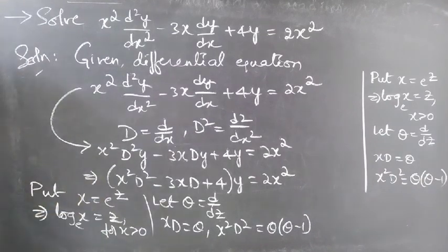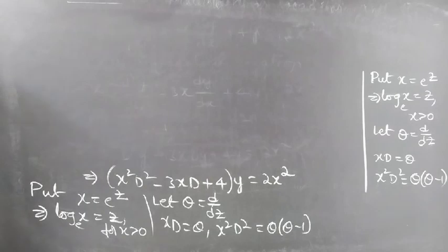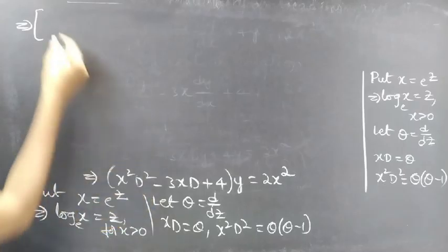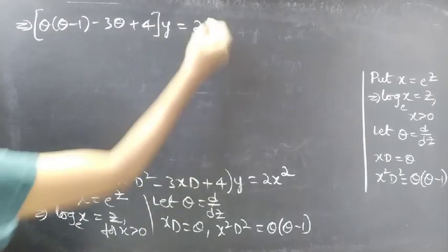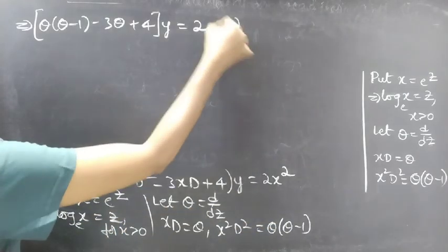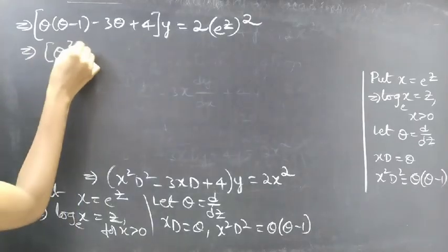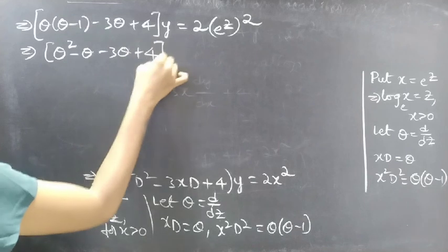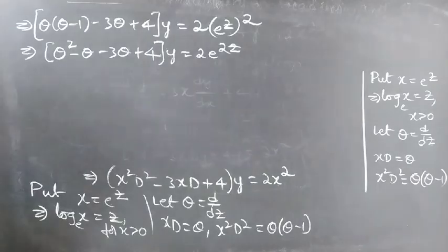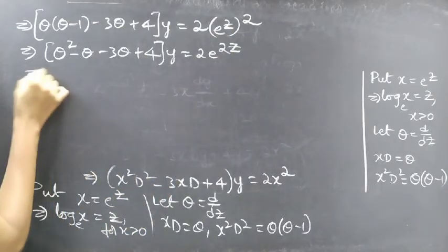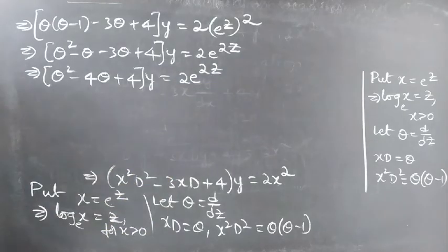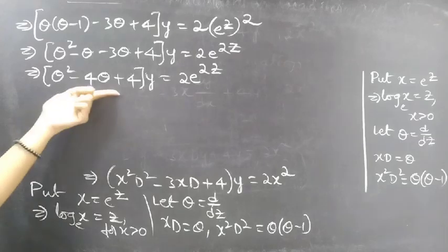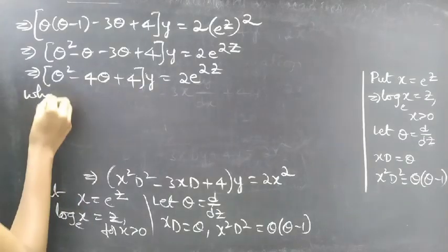Now put x equals to e^z, then log x equals z for x greater than 0. Let theta equals d/dz, where theta is a differential operator with independent variable z, then xD equals theta and x²D² equals theta(theta minus 1). Now this equation becomes: replace x²D² by theta(theta−1), minus 3 times theta, plus 4 times y equals 2e^z squared. This gives theta² minus 4theta plus 4 into y equals 2e^(2z). So this is a differential equation with constant coefficients, in operator form.